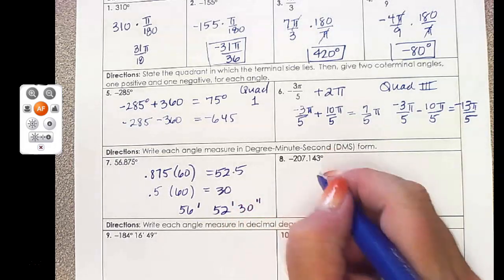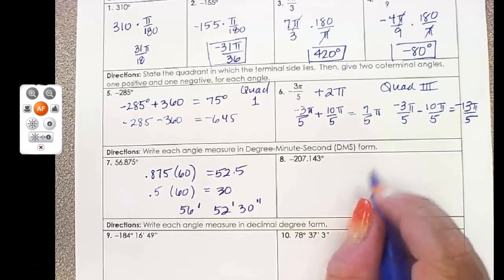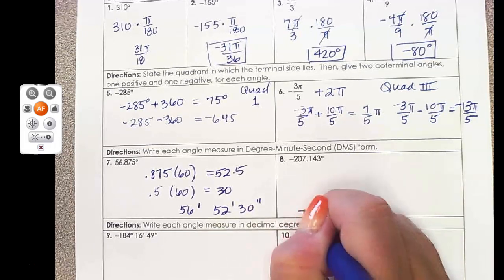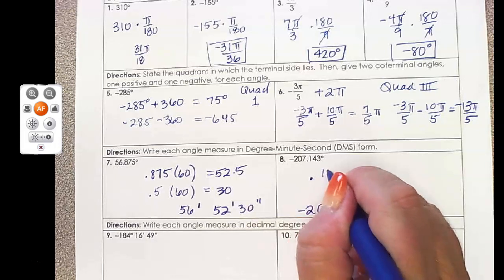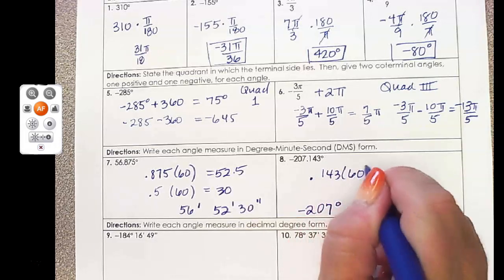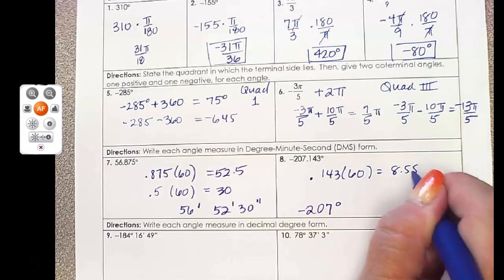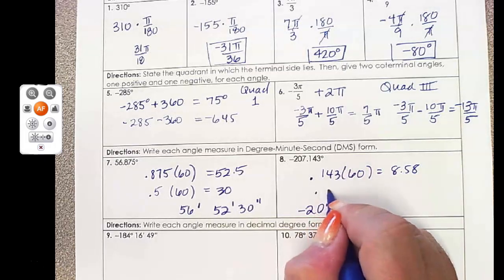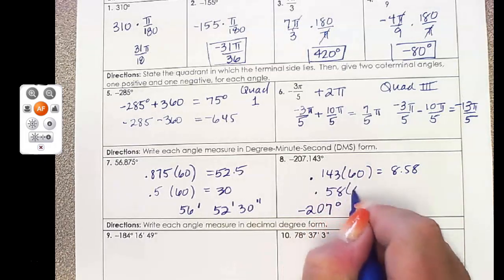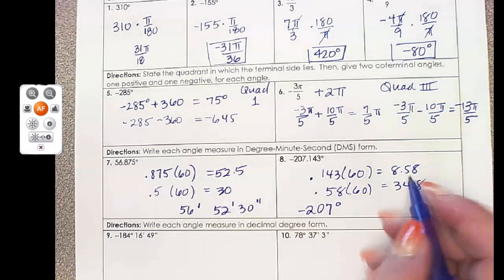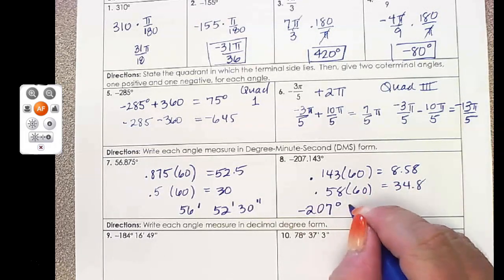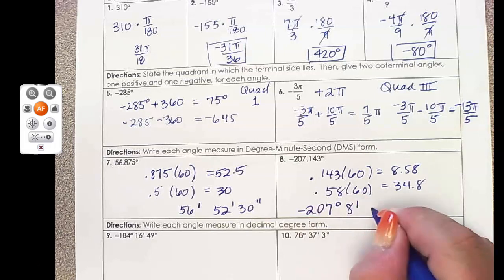Same with negatives, the process is the same. You're going to have negative 207 degrees. Then do 0.143 times 60, and we get 8.58. Then do 0.58 times 60, you get 34.8. So that's negative 207 degrees, 8 minutes, and 35 seconds.